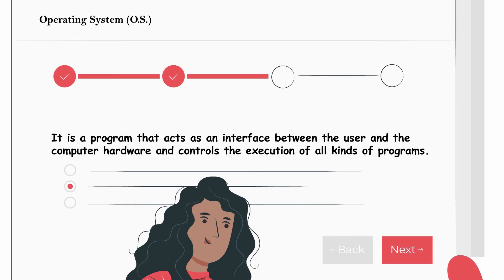The operating system is the intermediary medium for a user to communicate with the hardware. In earlier times there was no operating system and people used to try to communicate with the hardware directly, so each time they wanted to do anything they had to write so much code. A printf statement is the simplest example of how easy it is to print something, but without an operating system you would have to go through a lot of coding. This is where the operating system comes into the picture. In easy language, an operating system is a program that acts as an interface between the user and the computer hardware and controls the execution of all kinds of programs.